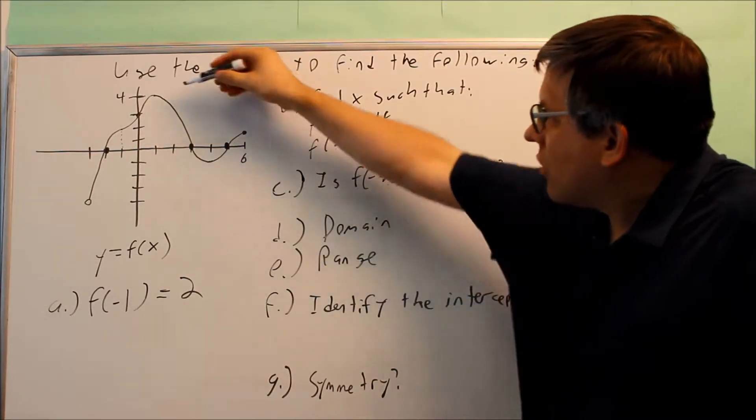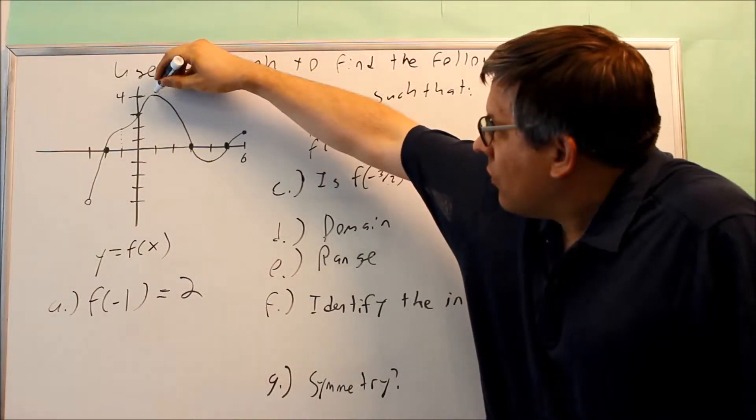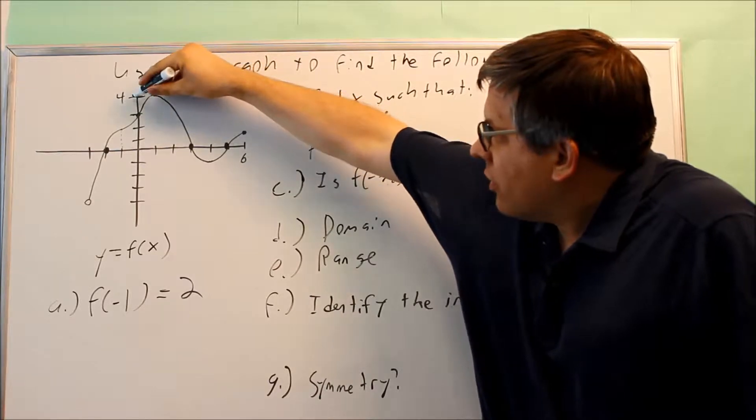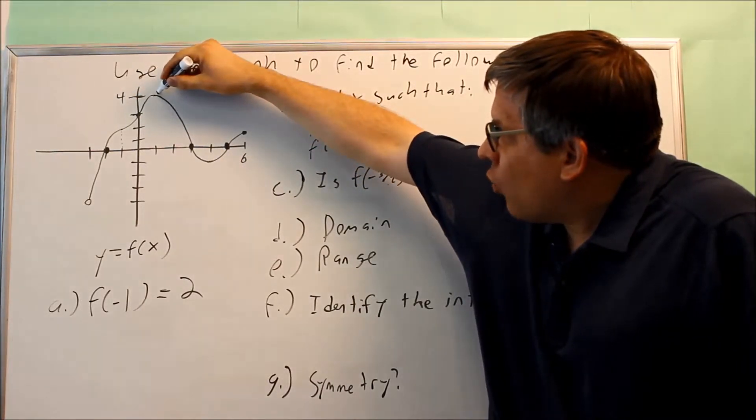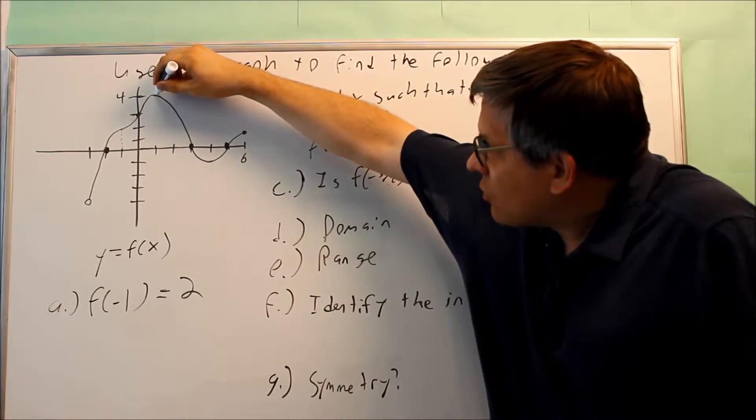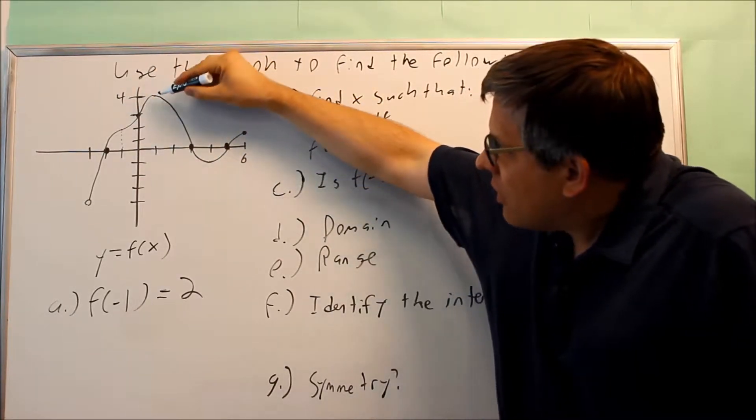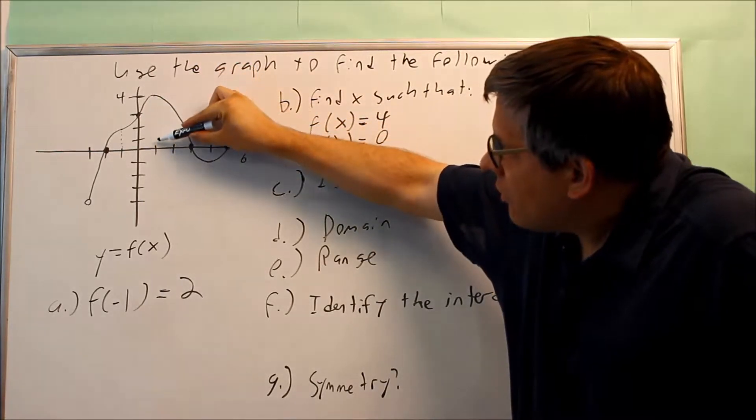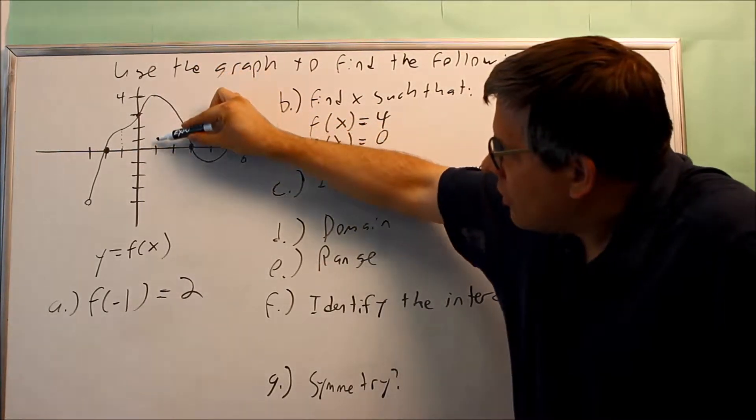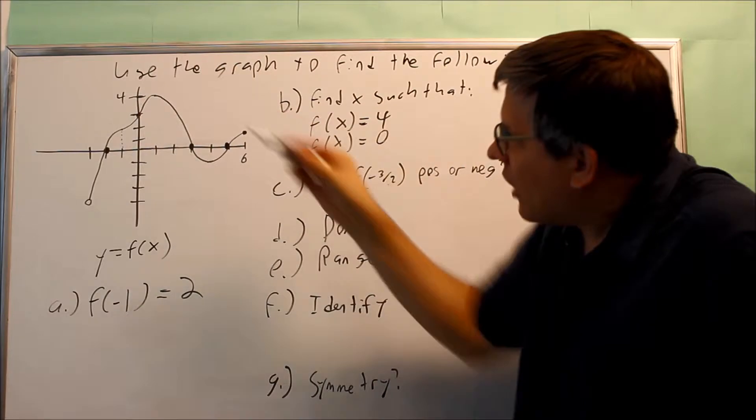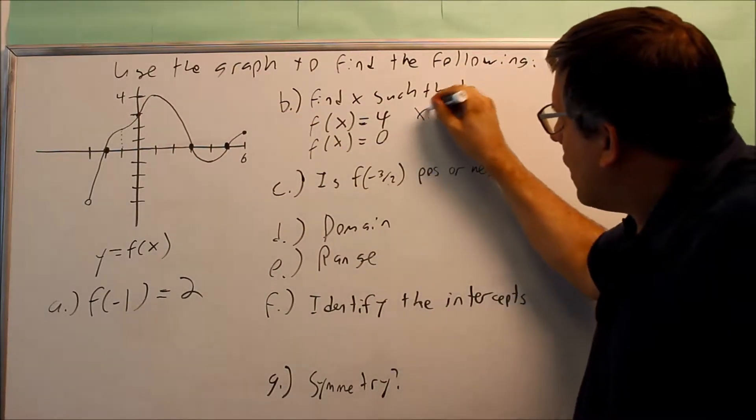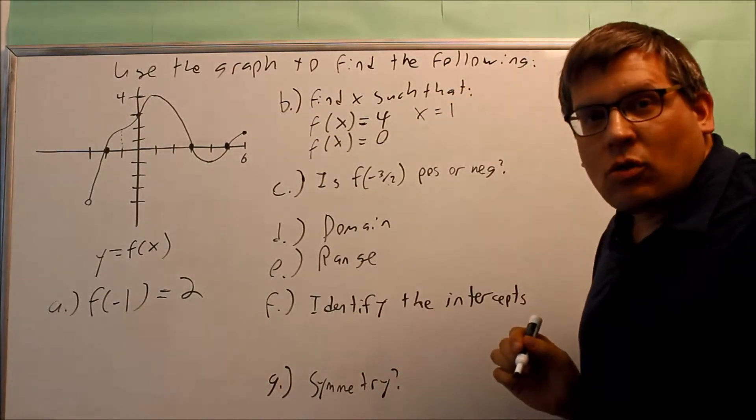So in this case, I look at the graph, and I notice that the y value is up here at 4. I want to indicate what x value is that occurring at. Well, at this point, I can just take this graph and I can go down to here, and so at the x value of 1, that's where the y value is equal to 4. So I would say here, x is equal to 1.